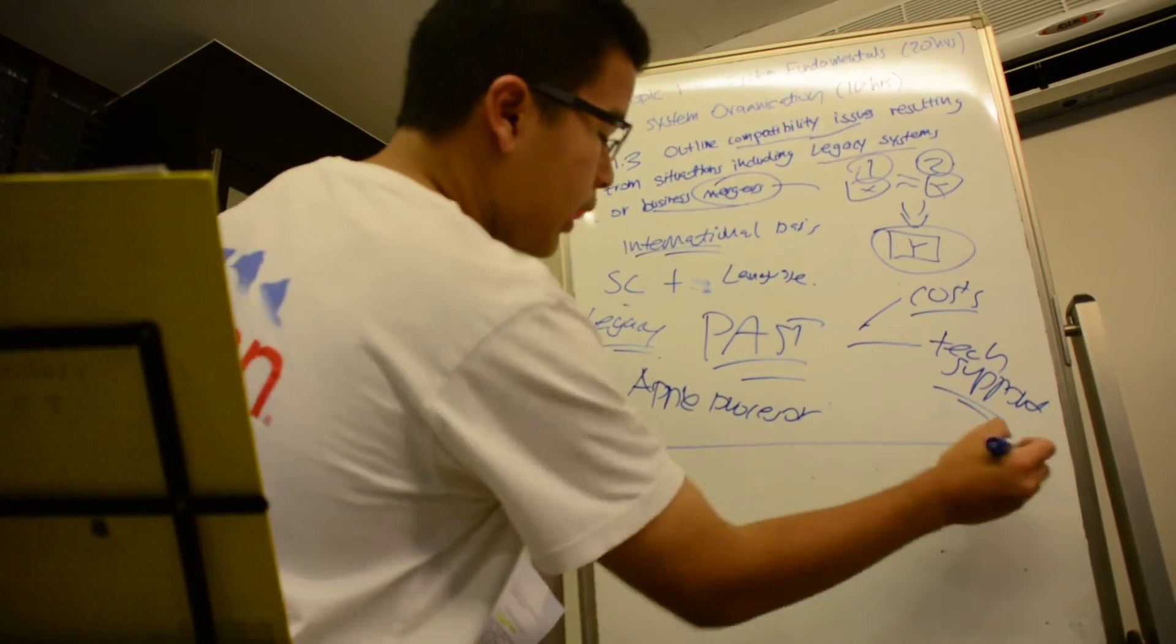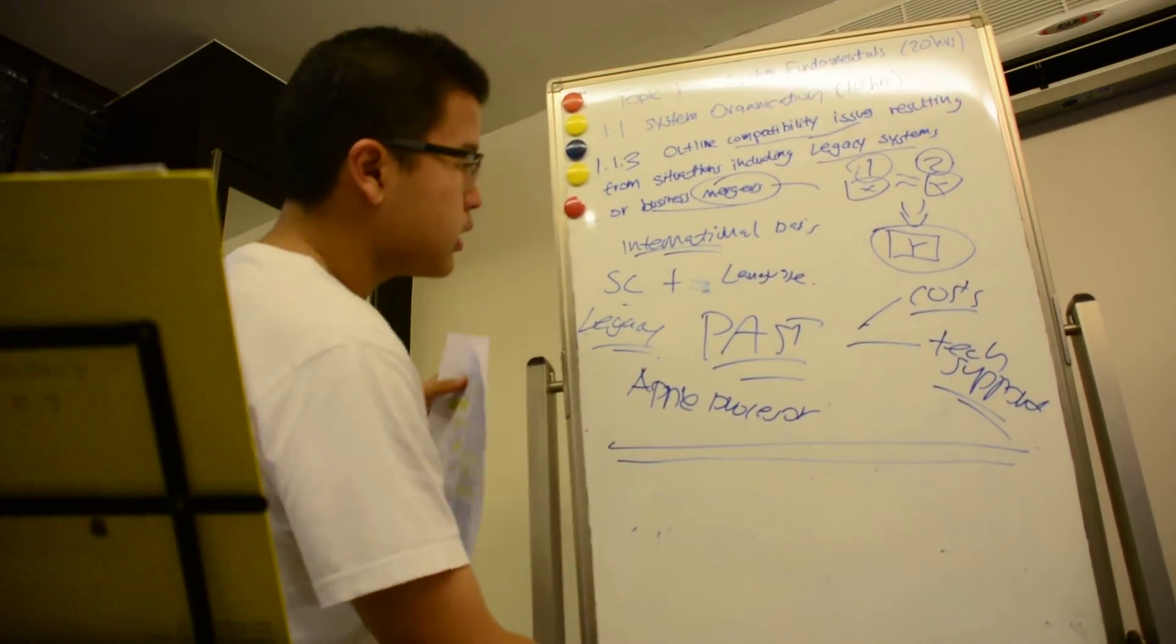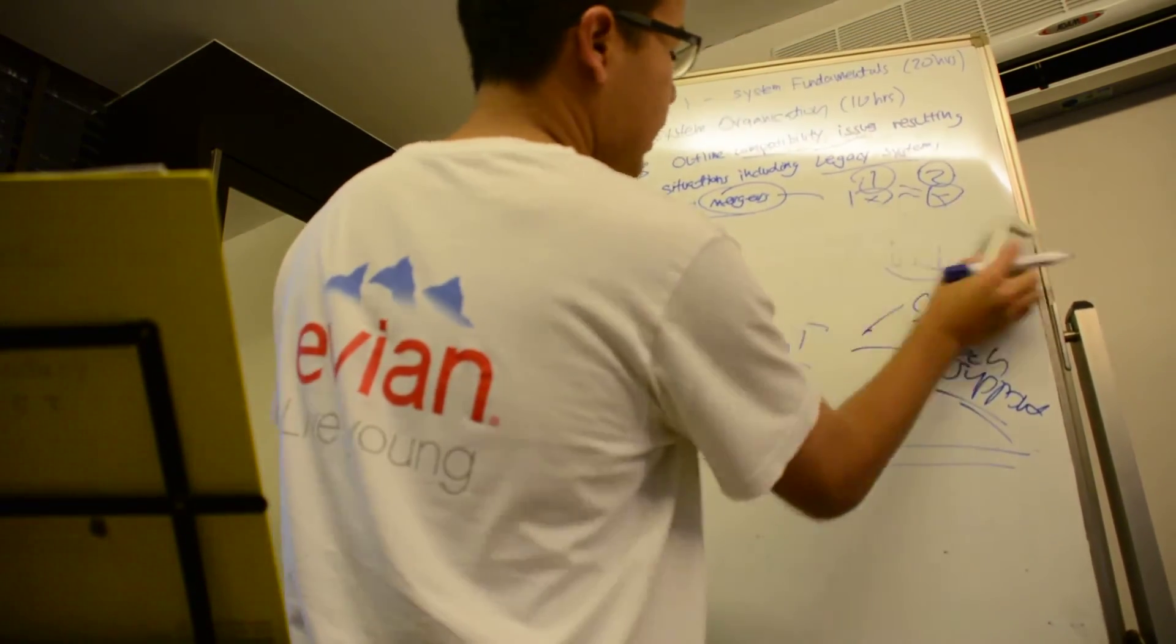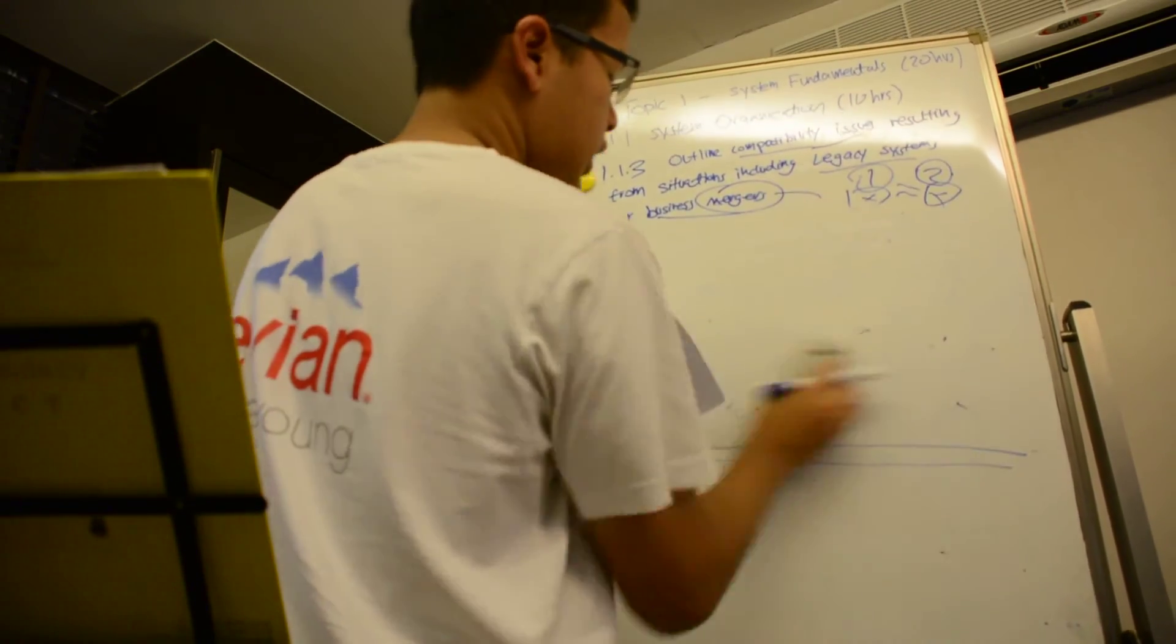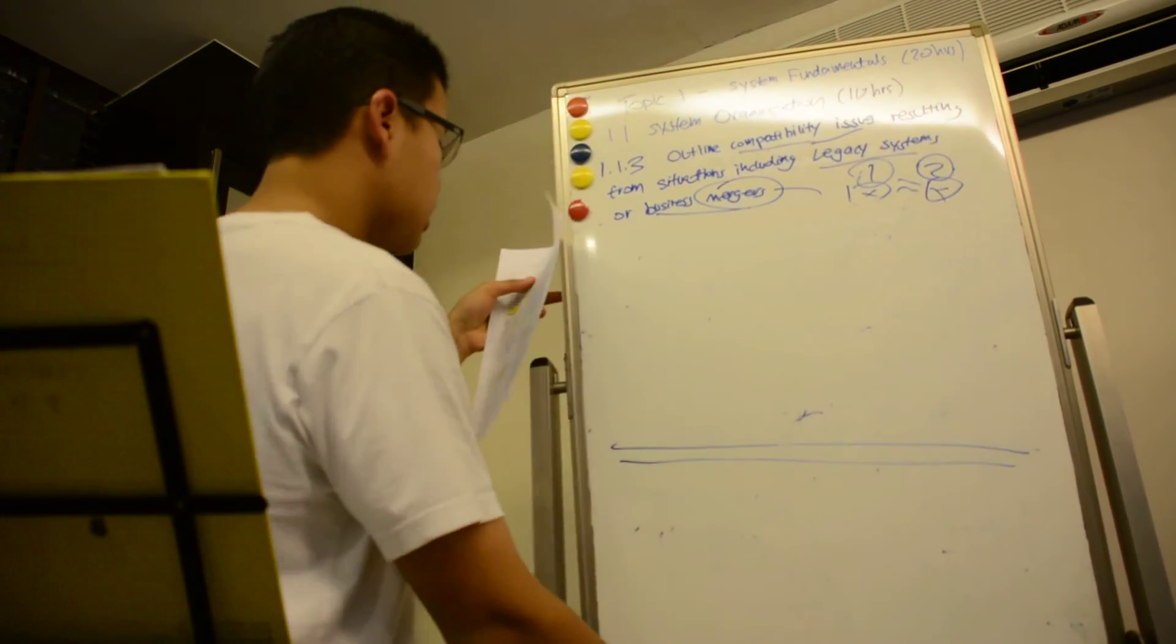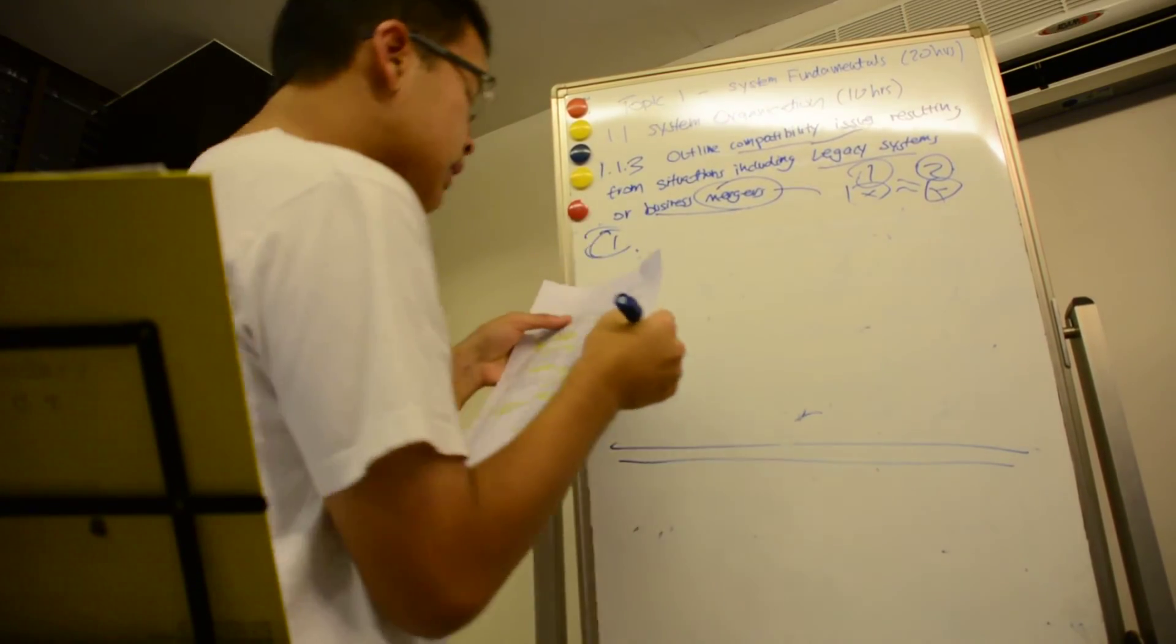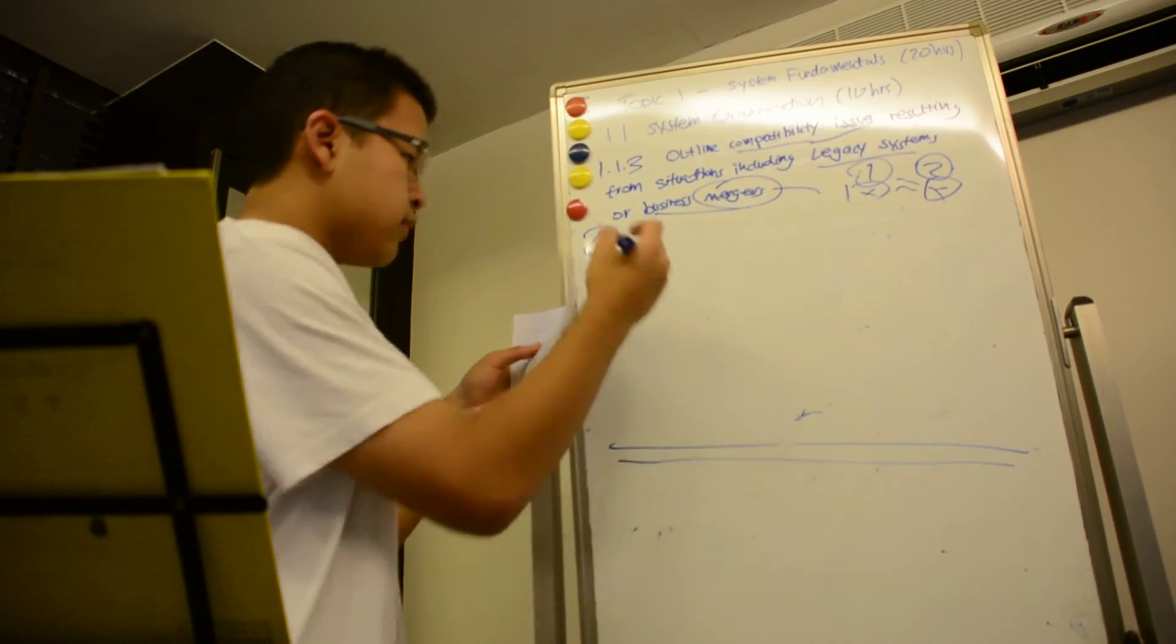So our main final summary of this. Let me just rub this up. As I have defined the keywords already. Compatibility, merge, and legacy system. So our essential thought or the final summary is that, let's give an example to sum it all off.